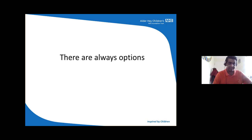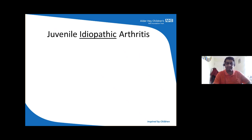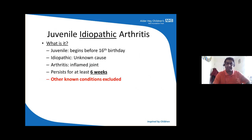Before I start explaining different options, I want to emphasize that in medicine and in life there are always options. I have always felt that we are very blessed, especially working in teams, that we are never option-less. Juvenile idiopathic arthritis, as the name indicates: juvenile means before the 16th birthday, idiopathic means we don't know exactly why children get this, and arthritis means inflammation of the joint.